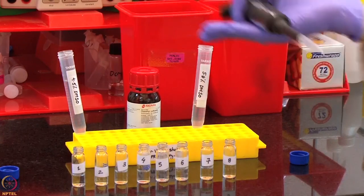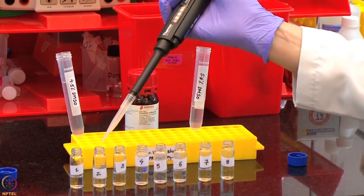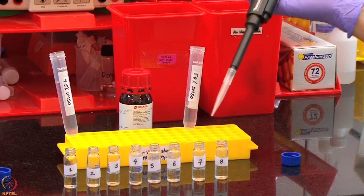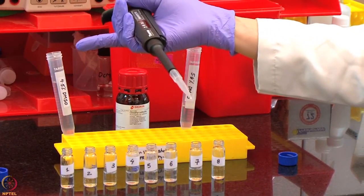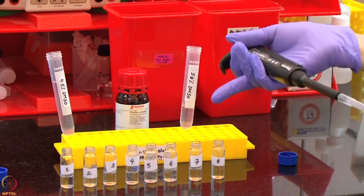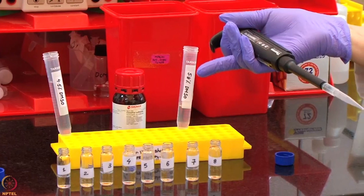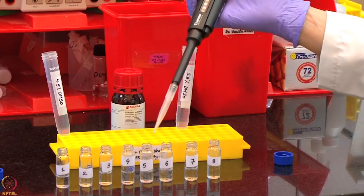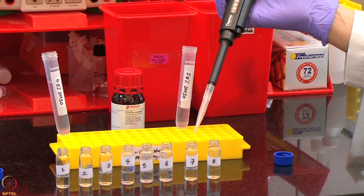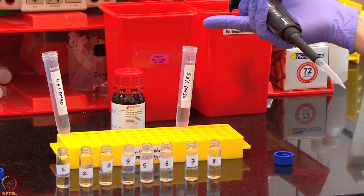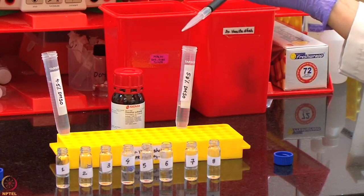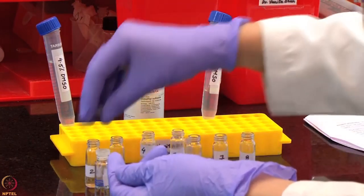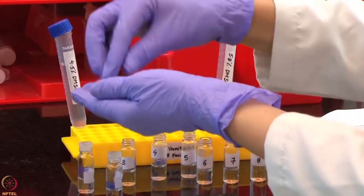we have numbered the tubes as 1 to 8 and added 200, 400, 600, 800, 1000, 1200 and 1400 microlitre of 4.5% DMSO in tubes 2 to 8 respectively. Following this, we added 1400, 1200, 1000, 800, 600, 400 and 200 microlitre of 5.8% DMSO in tubes 1 to 7 respectively. We will mix these solutions vigorously and put the lids on and keep them in dark till we are ready with all the other samples.